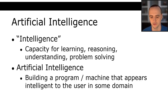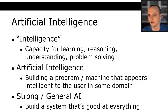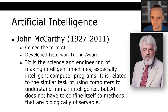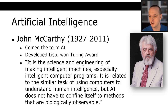John McCarthy coined the term AI, developed Lisp, and won a Turing Award. He says AI is 'the science and engineering of making intelligent machines, especially intelligent computer programs. It is related to the task of using computers to understand human intelligence, but AI does not have to confine itself to methods that are biologically observable.' So AI is not just about things that appear human — it's much more than robotics or the Terminator.